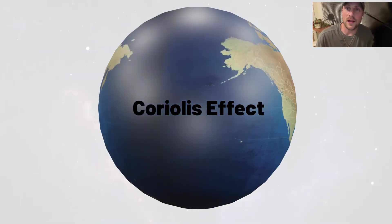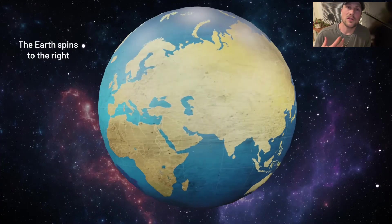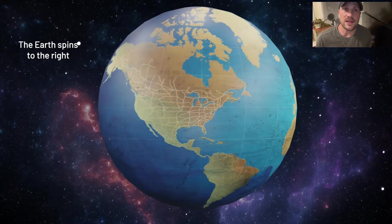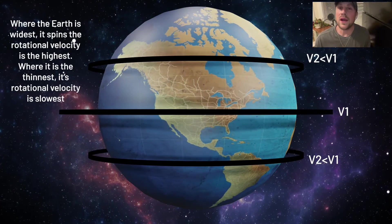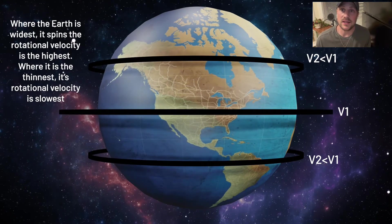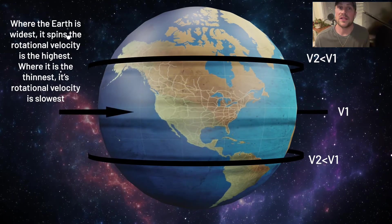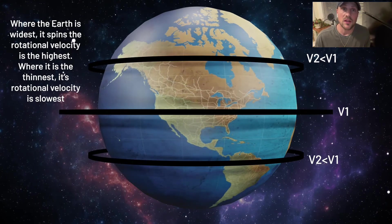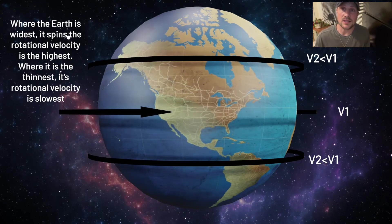This is because of the Coriolis effect of the earth. Now, the earth spins to the right or to the east. Where the earth is the widest, the rotational velocity is the highest. So that is in the center near the equator. Where it is the thinnest, like at the poles, the rotational velocity is the slowest.